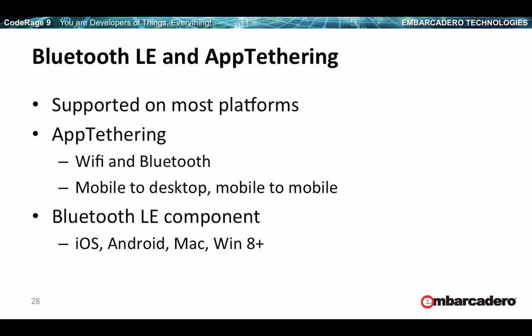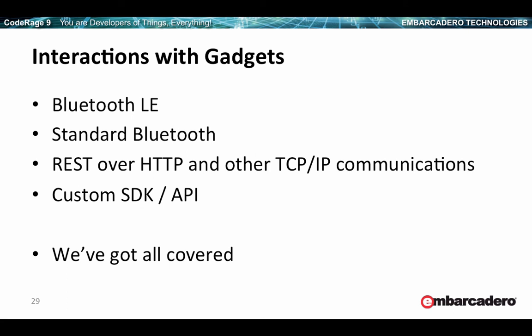Interacting with these gadgets can be done one of four key ways: through Bluetooth LE or standard Bluetooth (which means you can use app tethering), REST over HTTP (many little gadgets present web servers with REST APIs), or through custom SDKs and APIs — most written in C or straightforward C++. You can also build apps that run on gadgets that support a full-fledged operating system like Android. Note that Bluetooth LE on Windows requires Windows 8.1.